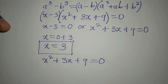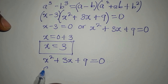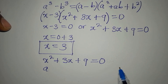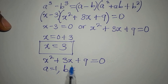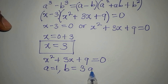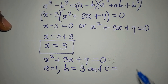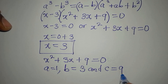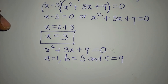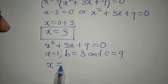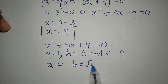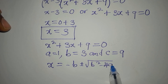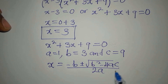We'll use the quadratic formula. Identifying the coefficients: a is the coefficient of x squared, which is 1; b is the coefficient of x, which is 3; and c is the constant, which is 9. The formula is x equals minus b plus or minus the square root of b squared minus 4ac, all over 2a.